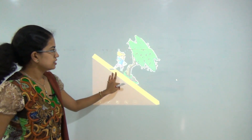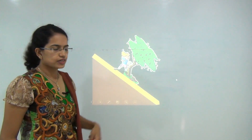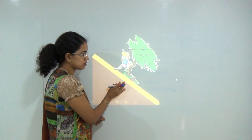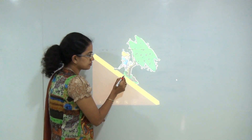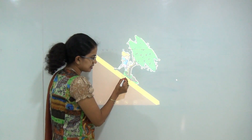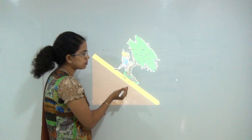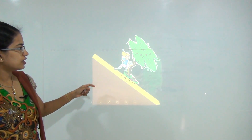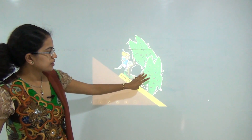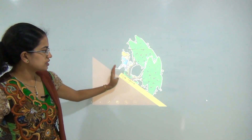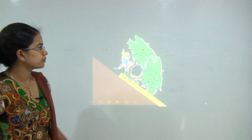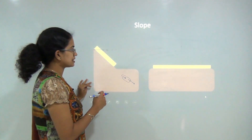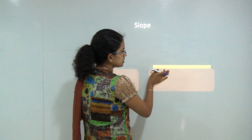The next factor is deforestation. A tree has its roots in the soil, and if this tree is cut down, the soil that it was holding gets loosened and slips down. So tree cutting or deforestation is another activity that contributes to soil erosion. The next factor is slope.